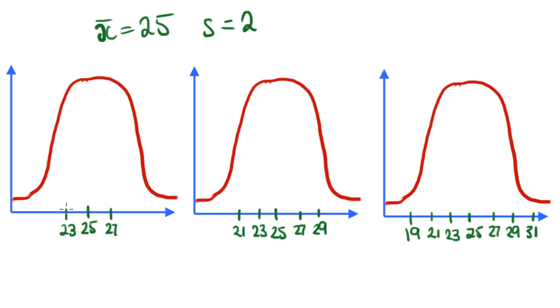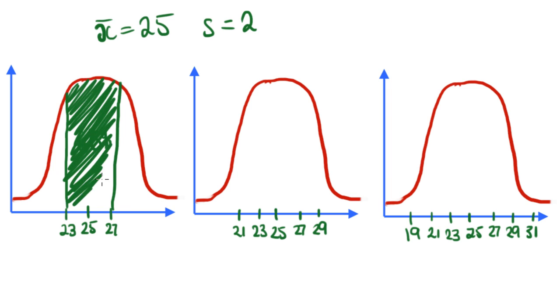With this first one, I know that between 23 and 27, I'm going to have 68% of all the data in that group there. So I'm just going to color this in. In this green section, we definitely have 68% of all the data between 23 and 27.